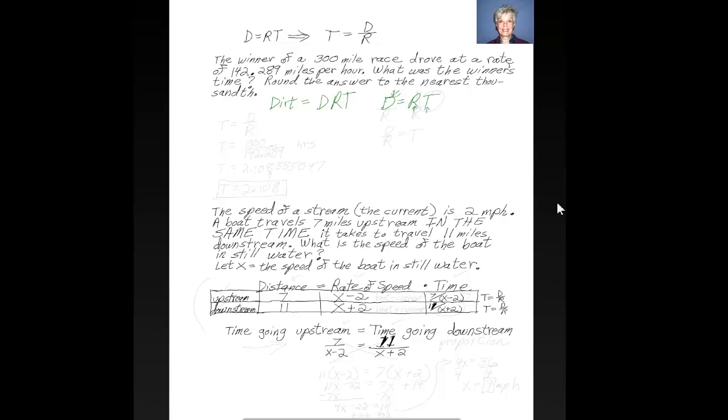So we have distance equals rate times time. What I'm going to do, since rate and time are multiplied, I'm going to divide both sides by the rate, by R, so that the R's over here cancel out, leaving me with T. So now I have a formula, T equals D over R. In other words, time equals distance divided by rate. Now I can do the problem.